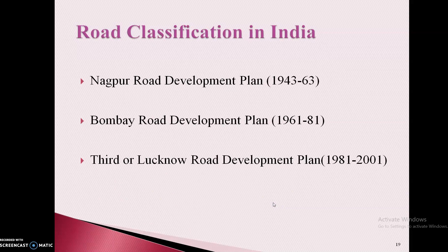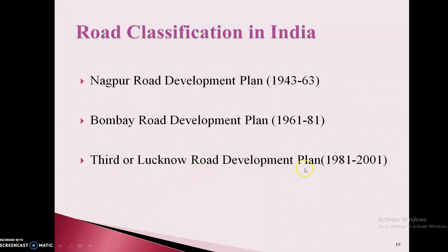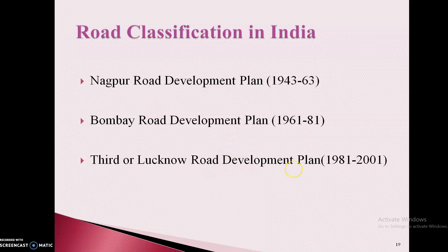Here we will see the summary of how roads are classified in India. They are classified on a general basis, and further under the Nagpur Road Development Plan for 1943 to 63, the Bombay Road Development Plan for 1961 to 81 — all these plans were planned and executed for further 20 years. Third is the Lucknow Road Development Plan from 1981 to 2001, and again up to 2020 this third road development plan was modified for a further 20 years. Right now, we are following this classification of roads all over India.